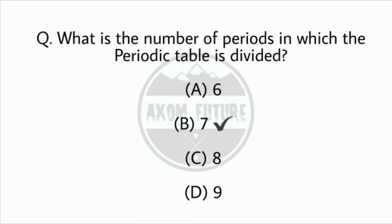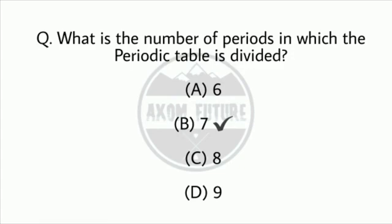Question 14. What is the number of periods in which the periodic table is divided? Question 15. There are how many groups in the periodic table? The answer is 18 groups.